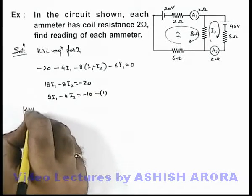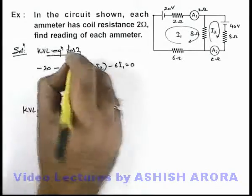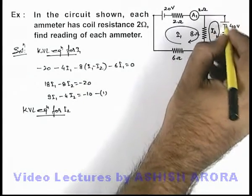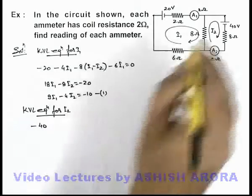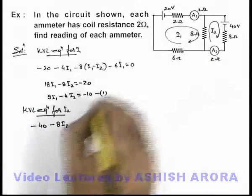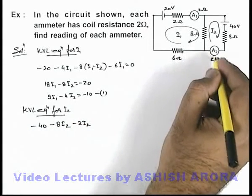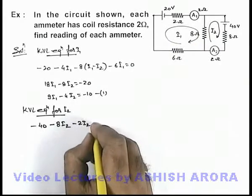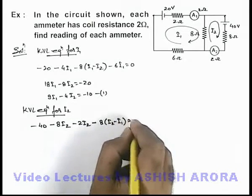Now if we write the KVL equation for current i2, that is in the second loop, say we start from this point, then along with the current if we move, there'll be first a potential drop of 40 volts, then it is minus 8i2, then it is minus 2i2 — because we're taking the ammeter to be equivalent to a resistance of 2 ohms — and then in this direction it'll be minus 8(i2 minus i1) equal to zero.